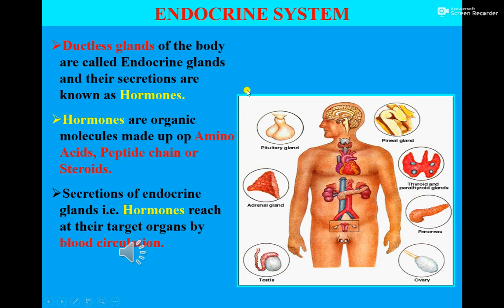Exocrine glands are also known as duct-bearing glands. These glands possess ducts and their secretion reaches the site of action through their duct. For example, the secretion of the liver — that is bile — reaches the duodenum through the bile duct. Pancreatic secretion reaches the duodenum through the pancreatic duct. Mammary glands possess lactating ducts and their secretions reach the nipples through these lactating ducts.